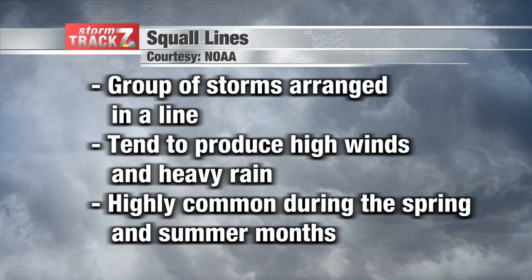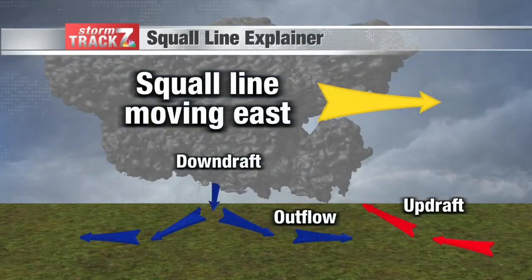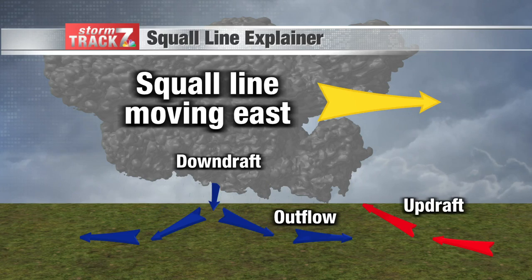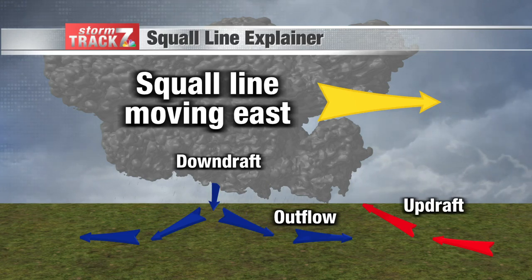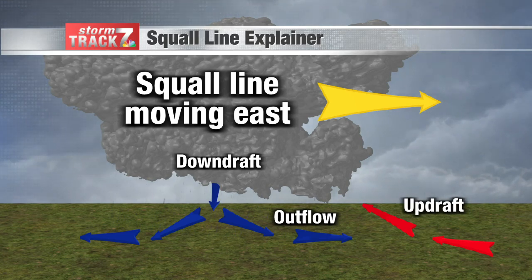We usually see these during the spring and summertime months, the warmer months in general. In terms of explaining what this is: the red arrows that you see represent warm, humid air — that's what's known as the updraft, which fuels the thunderstorm, the squall line itself.